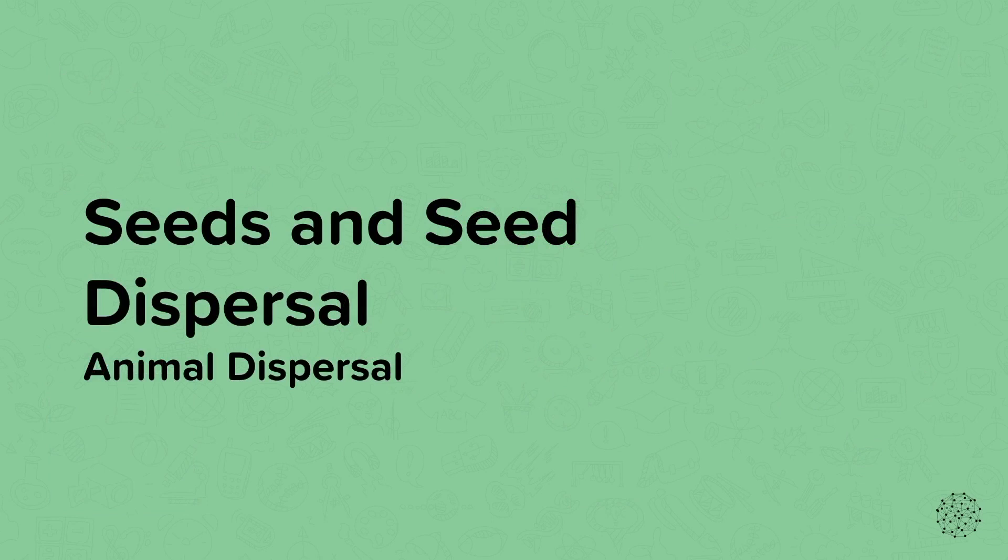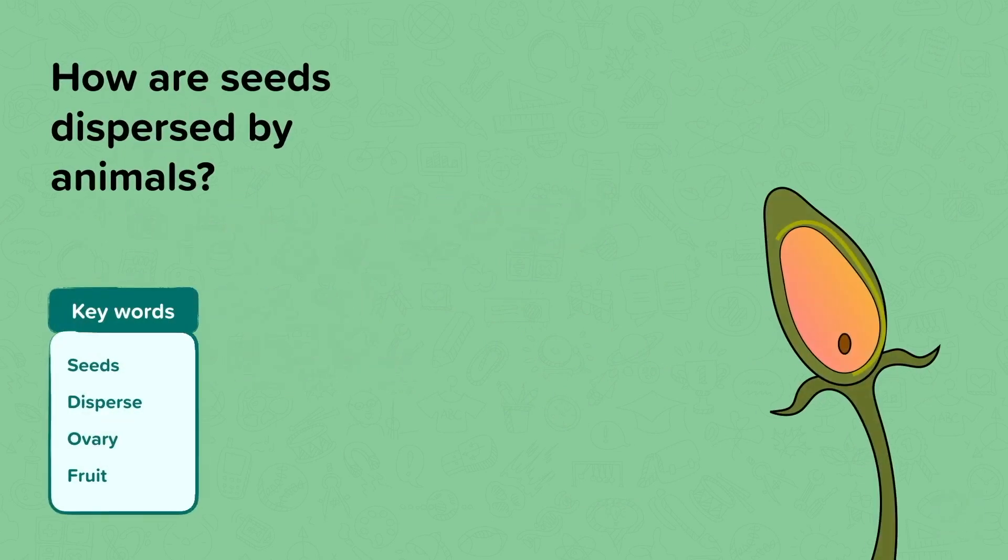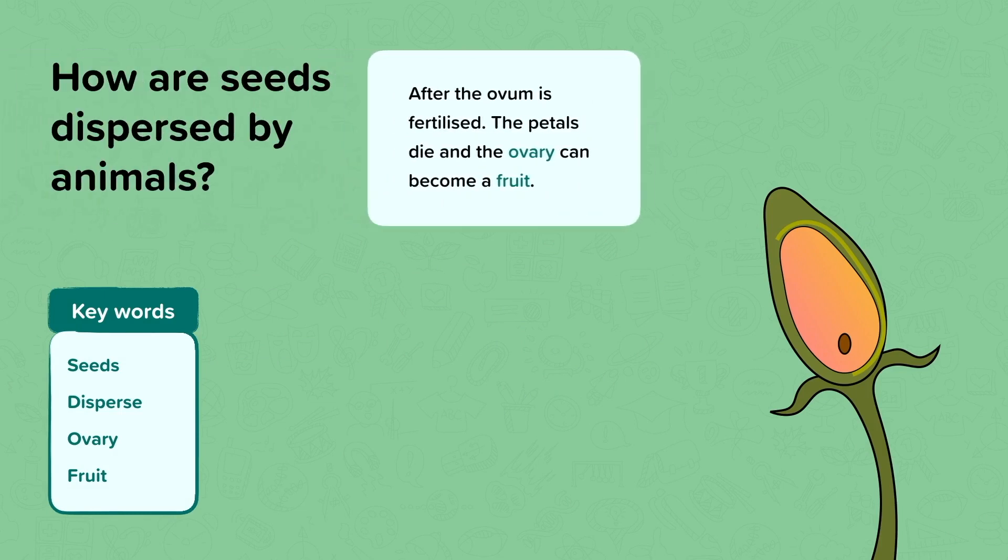Animal dispersal. How do you think animals could disperse seeds? After an ovum is fertilised by pollen, the petals of a plant may die and the ovary can become a fruit. This fruit can be eaten by an animal.